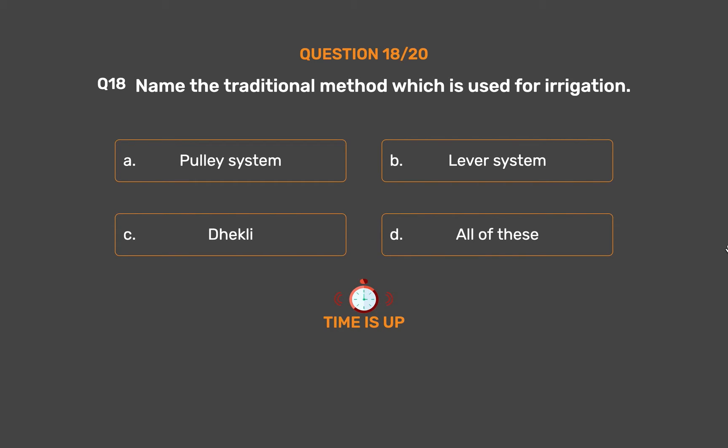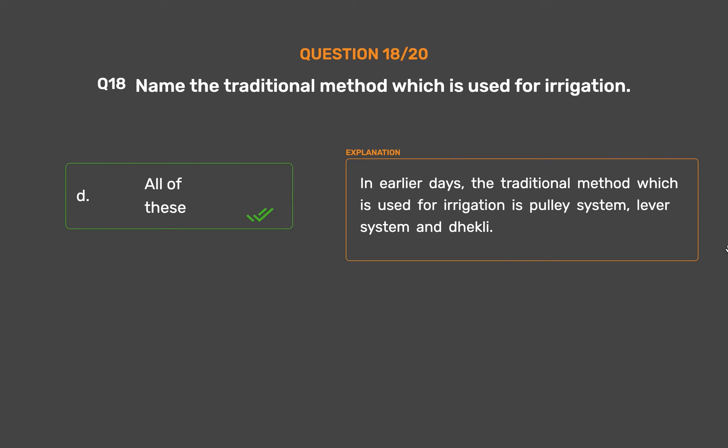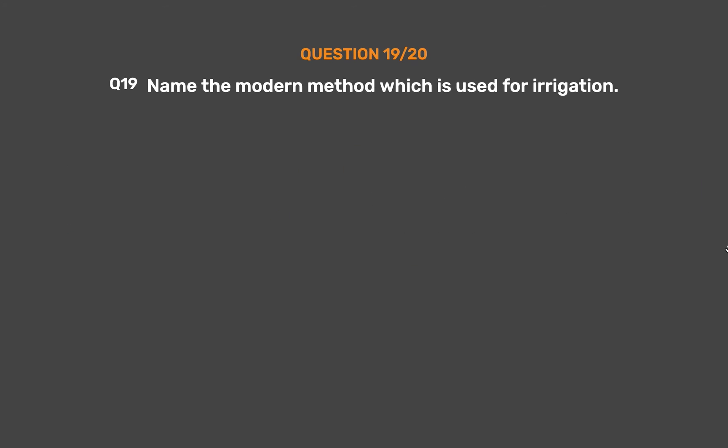The correct answer is Option D: All of these. In earlier days, the traditional methods used for irrigation are pulley system, lever system, and dhekli.